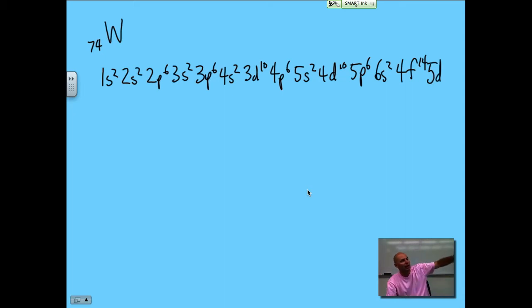5D. And I got to count across. Don't forget that there is one in 71 spot. 1, 2, 3, 4. And that would be the electron configuration for tungsten.